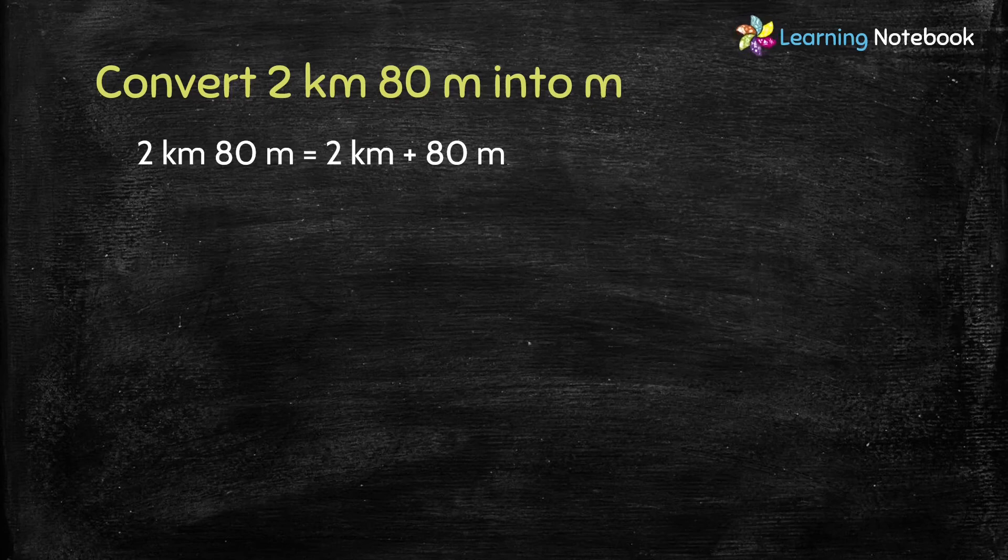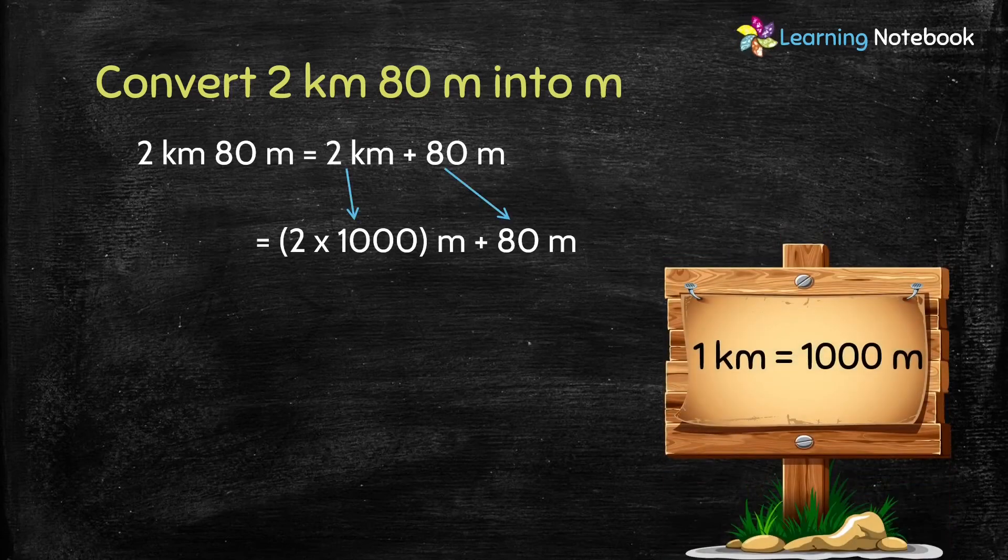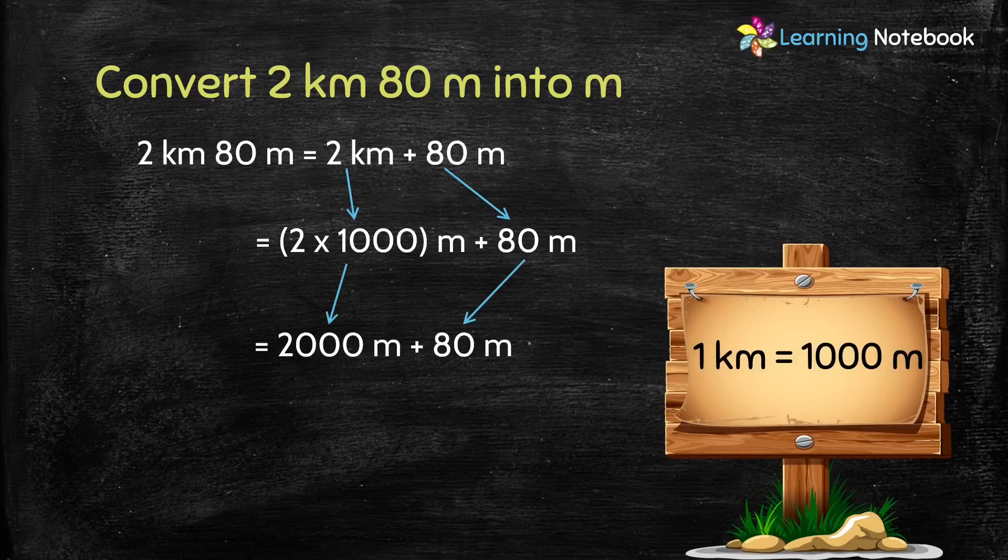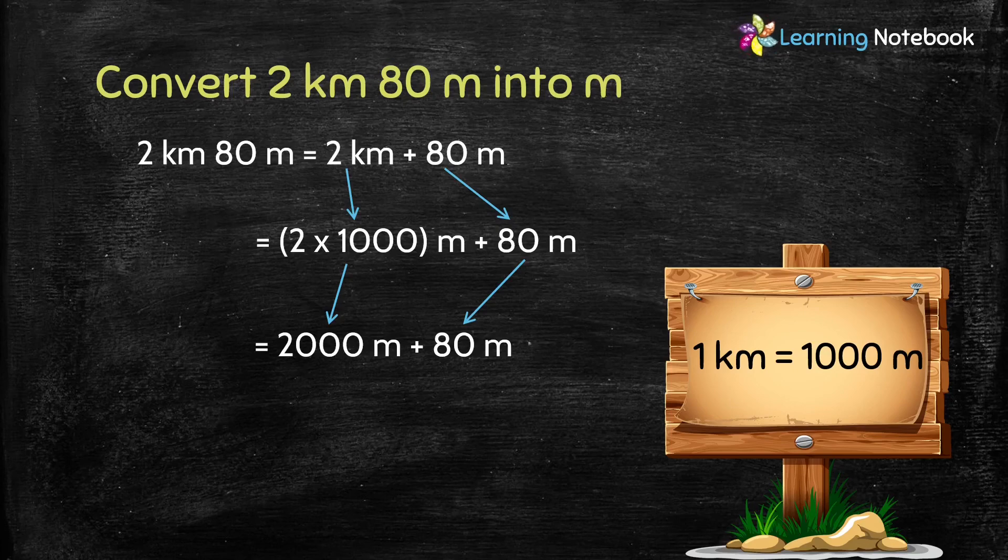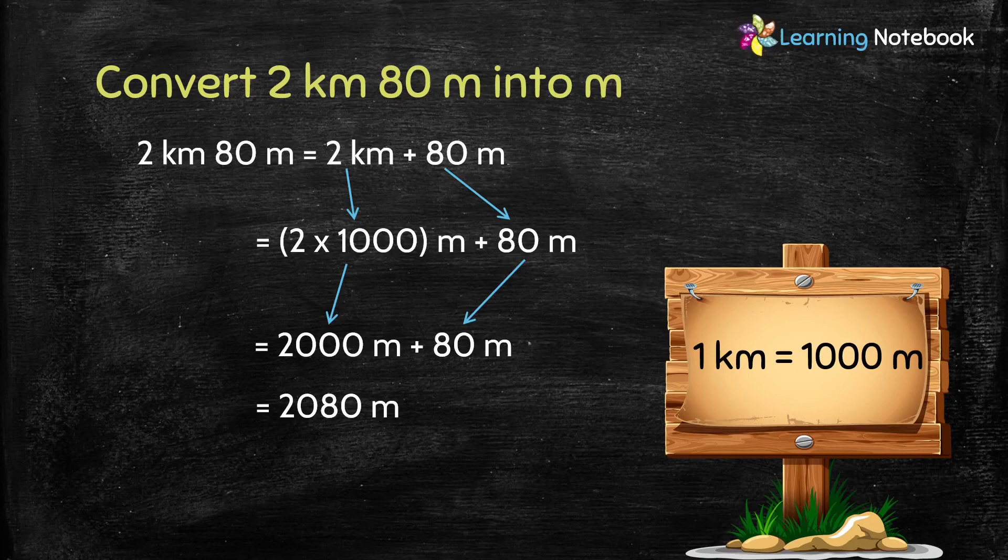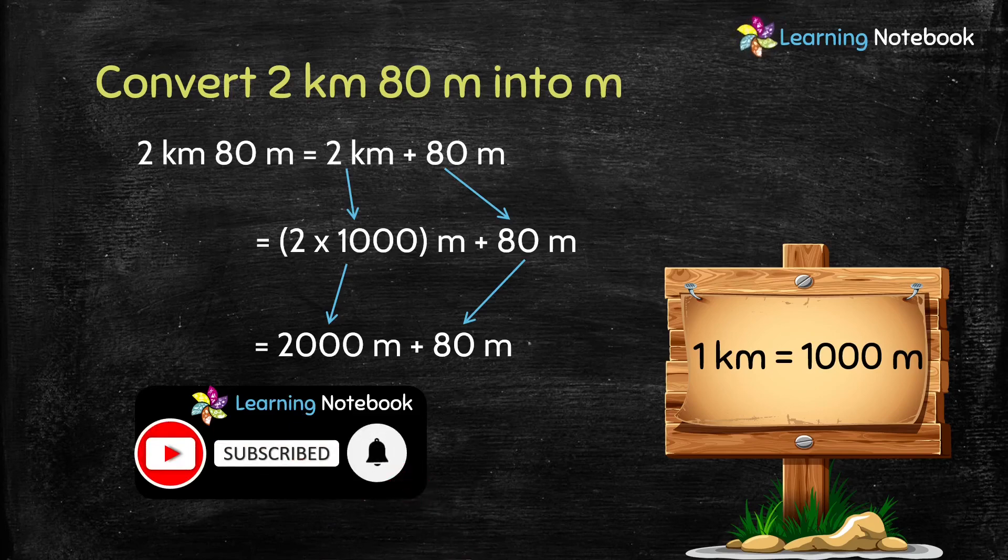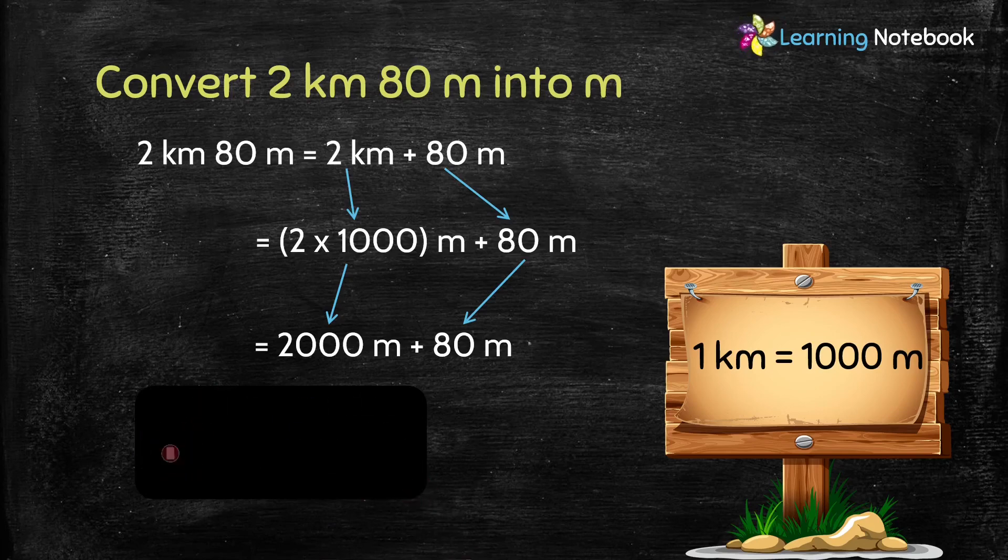So, let's convert 2 kilometers. We will multiply 2 by 1000, which is equals to 2000. So, we get 2000 meter plus 80 meters. Let's add these two numbers. And we get the answer as, 2080 meters. So, 2 kilometer 80 meters equals to 2080 meters.